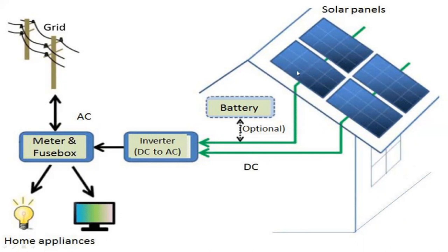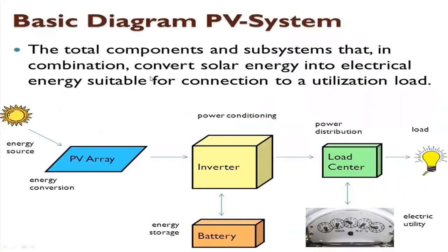Cells become modules and modules become arrays — this is a module and this is an array of solar panels. Looking at the basic diagram of a photovoltaic system: the total components and subsystems in combination convert solar energy into electrical energy suitable for connection to a utilization load. A load is whatever we connect — whether resistive, inductive, or capacitive loads.